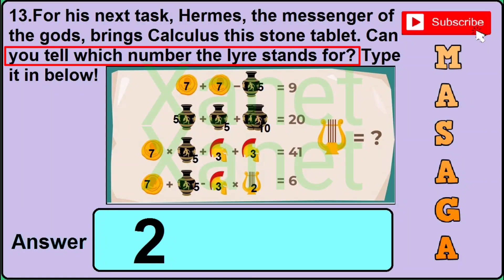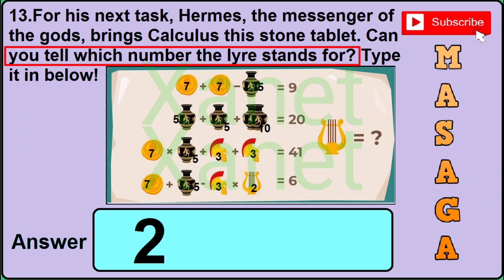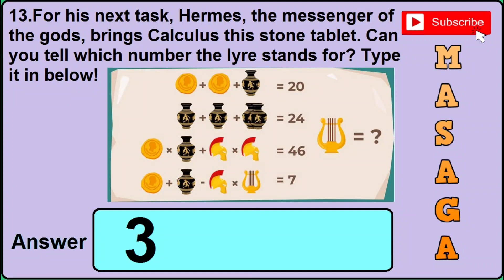Now in version 6 of this question the image is similar to version 5 but the question is different. It is asked 'can you tell which number the liar stands for?' then the correct answer will be 2, so you need to type 2 in the answer box. Now in version 7, just read the question and watch the image — if you find the same thing I have shown here then the correct answer will be 3, so you need to type 3.